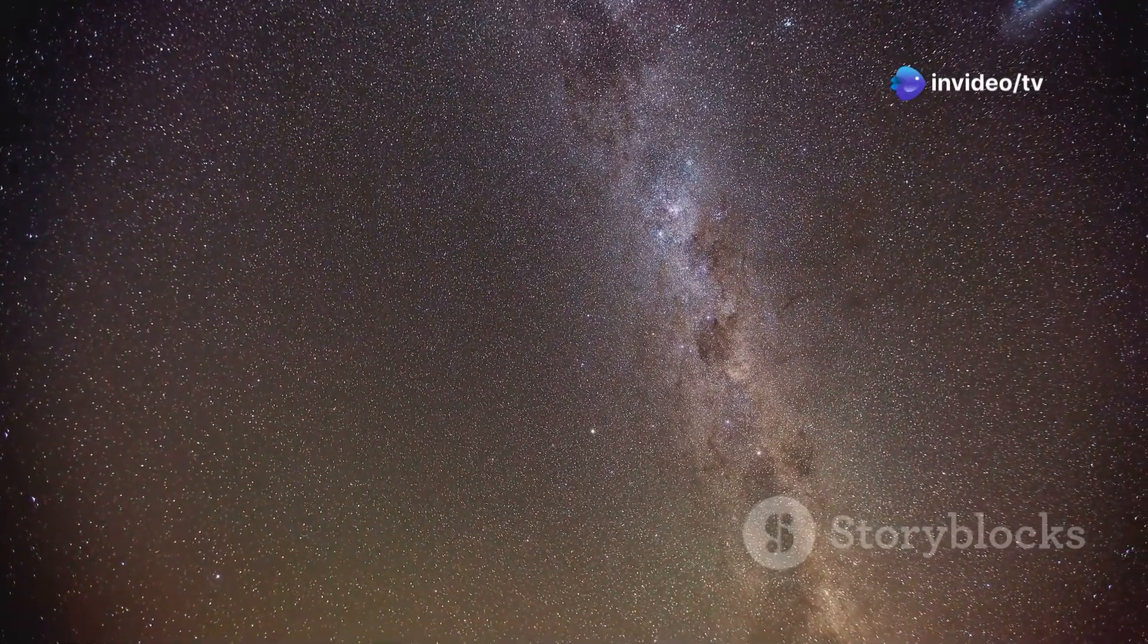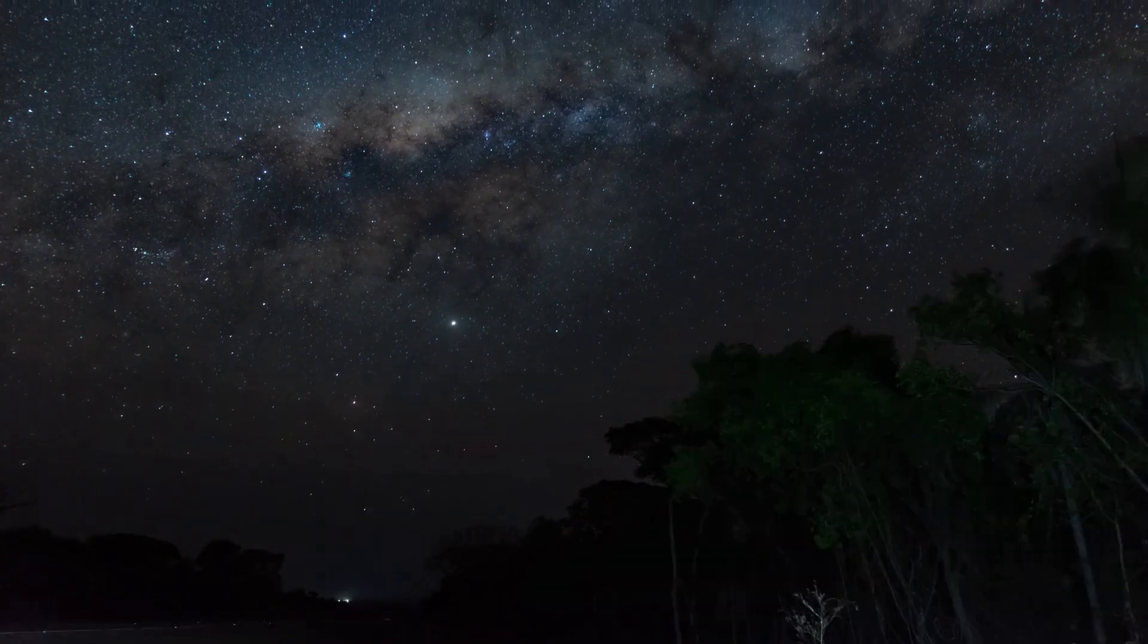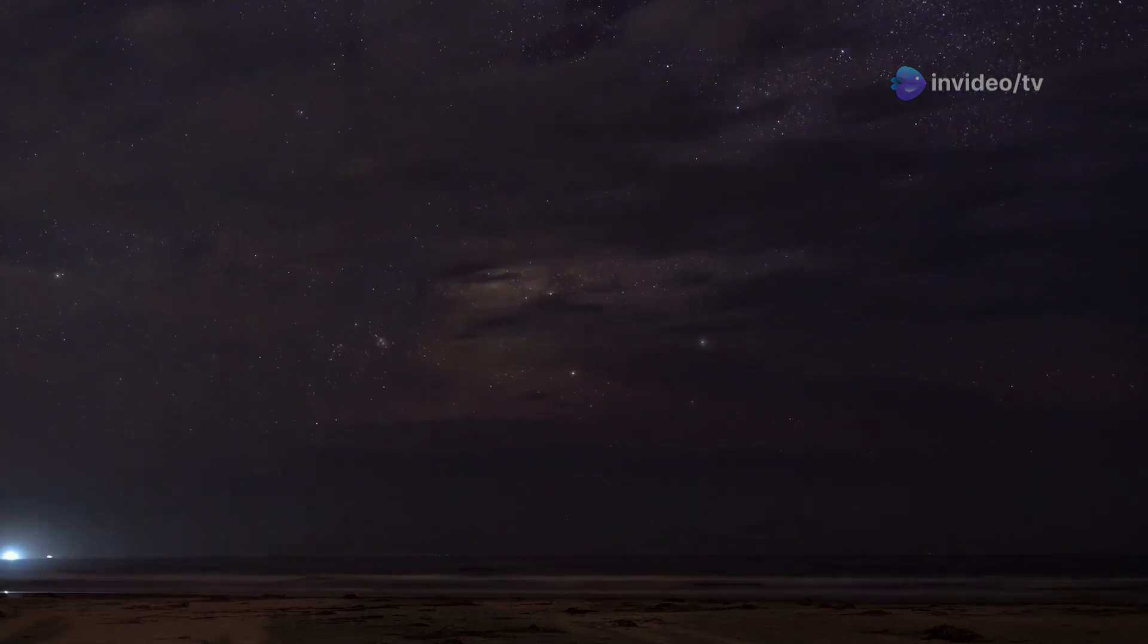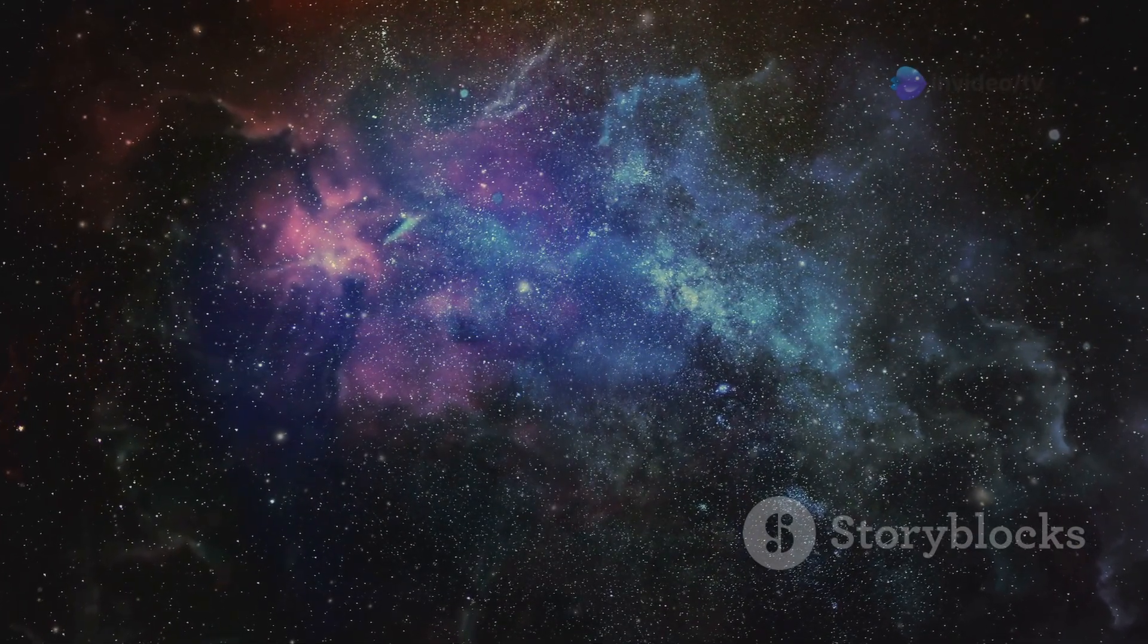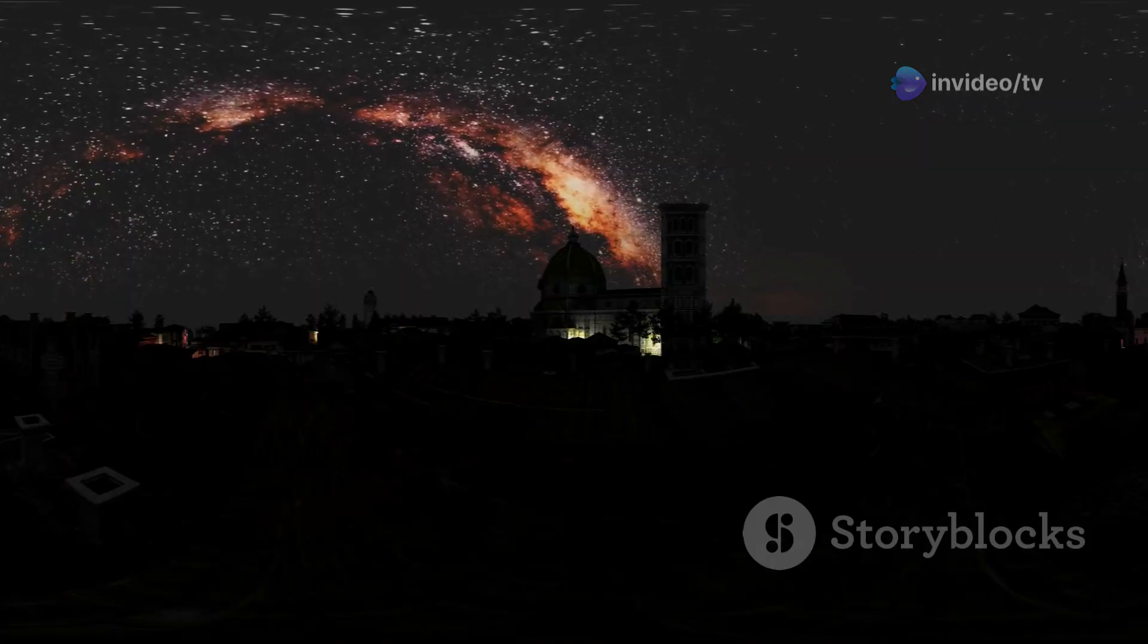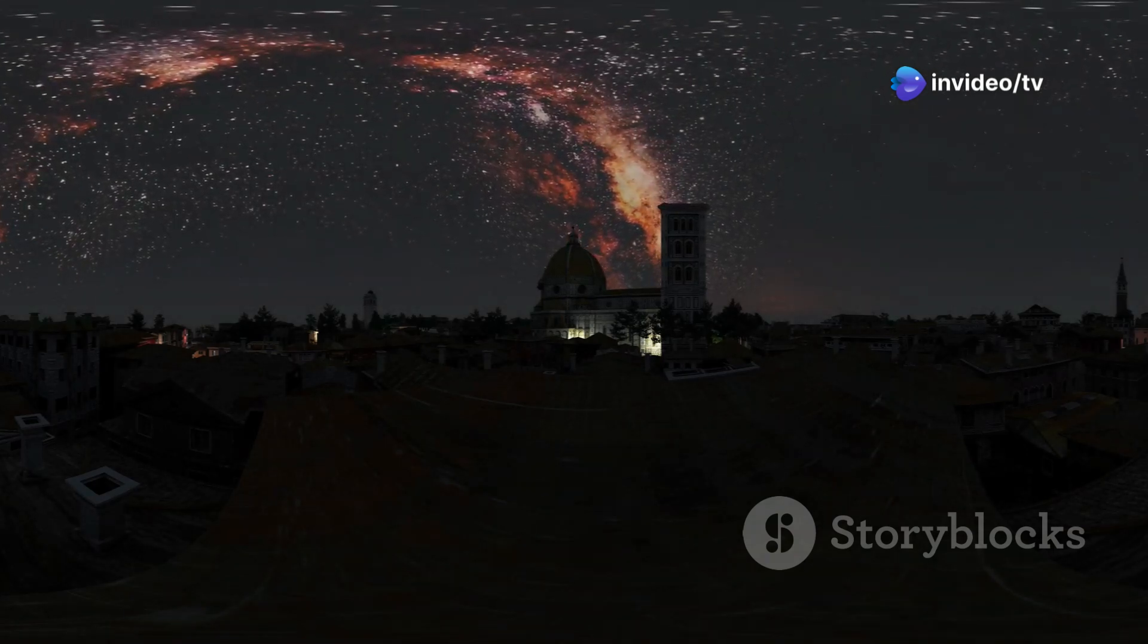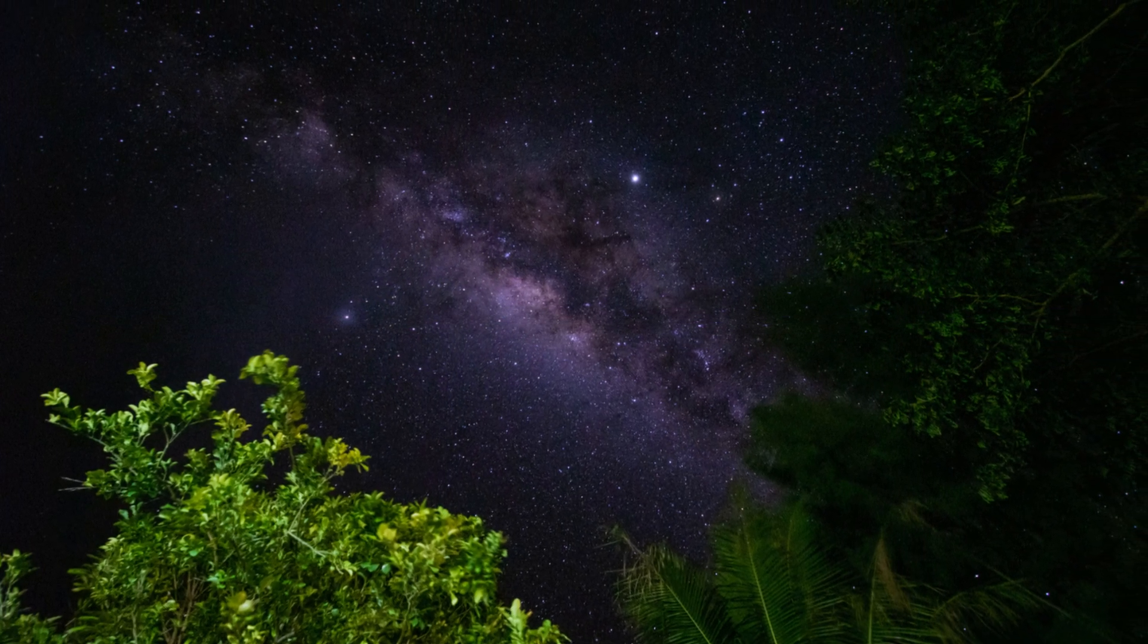Within this vast expanse there are an estimated 100 billion to 400 billion stars. Each of these stars could potentially host its own system of planets, moons, and other celestial bodies. That's more stars than there are grains of sand on all the beaches on Earth. Just imagine the countless possibilities for life and other phenomena in such a star-filled galaxy. And the Milky Way is just one of billions of galaxies in the observable universe. It's staggering to think about the sheer number of stars and planets that must exist out there.